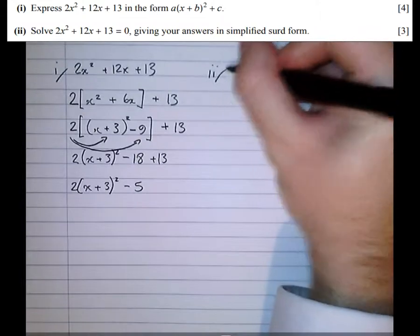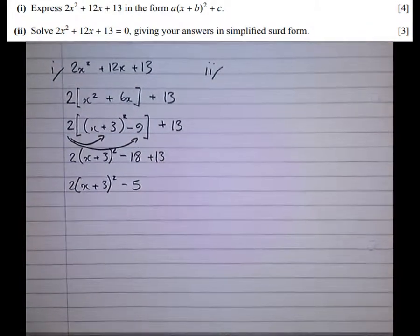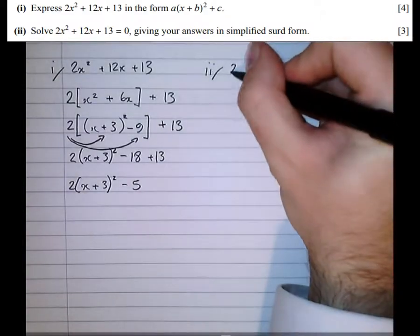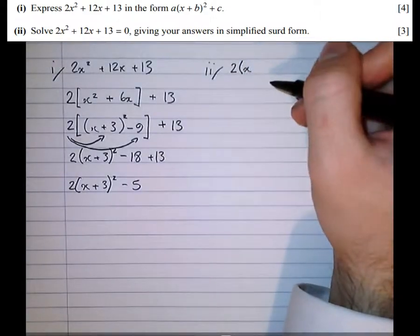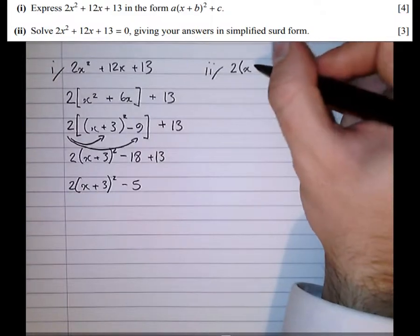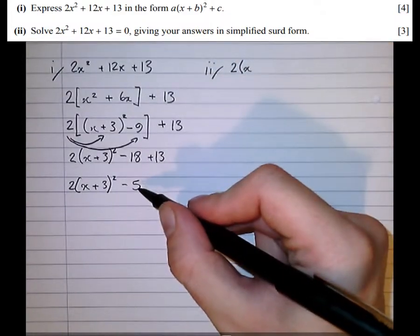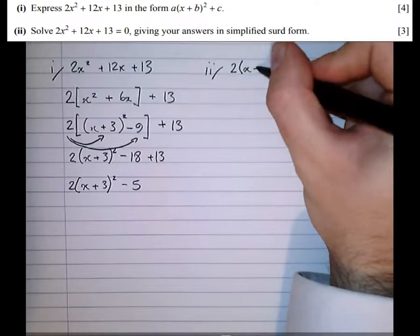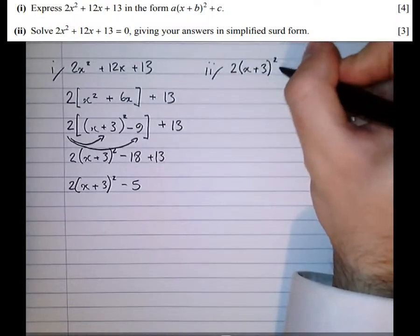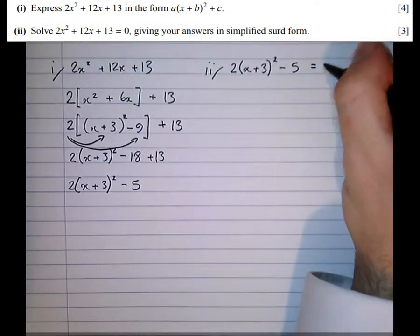Part 2 is now asking us to solve this equation. Well, notice the equation that we're asked to solve, the left-hand side, is exactly the same as what we've just completed the square for. So instead of writing 2x² + 12x + 13, we can actually write the complete square form that we've just found in the first part. 2(x + 3)² - 5 = 0.